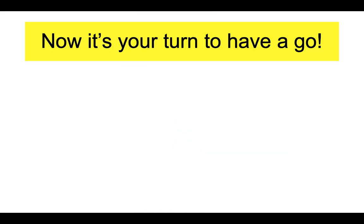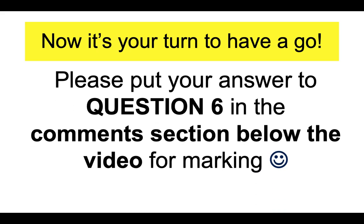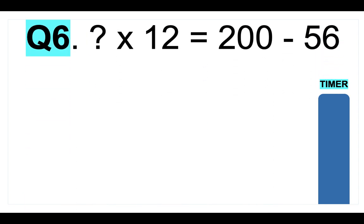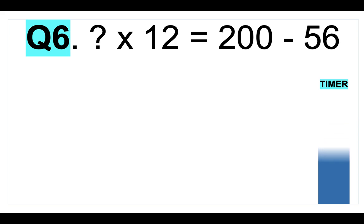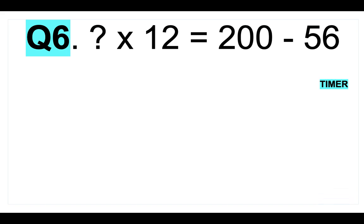So you have a go yourself. Please put your answer to question number six in the comments section below the video for marking. Your question is: what multiplied by 12 equals 200 minus 56? Here's your timer.